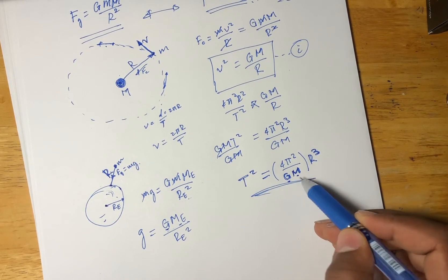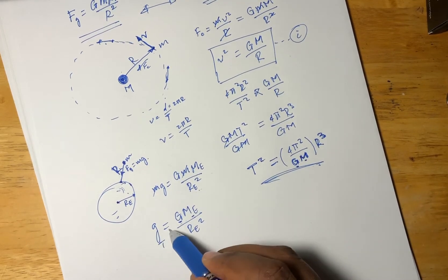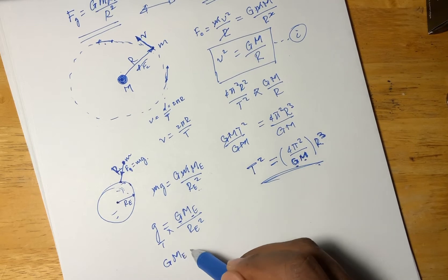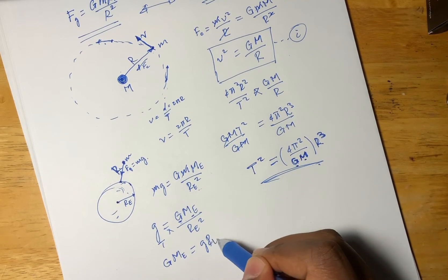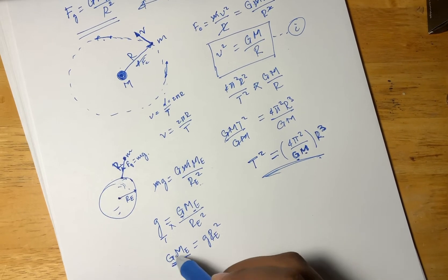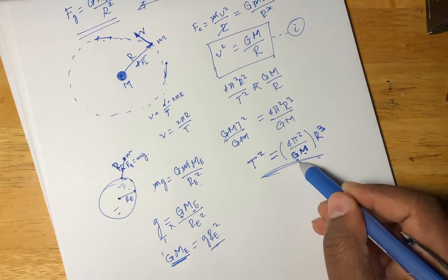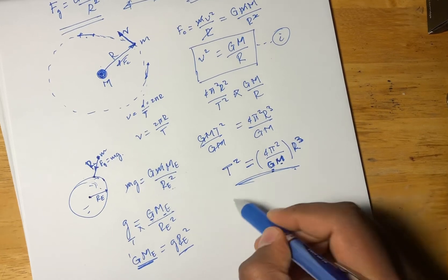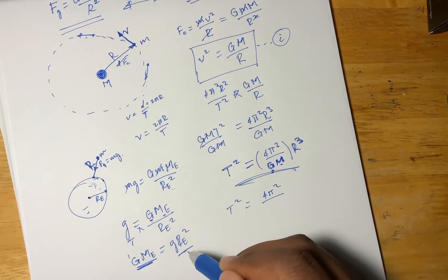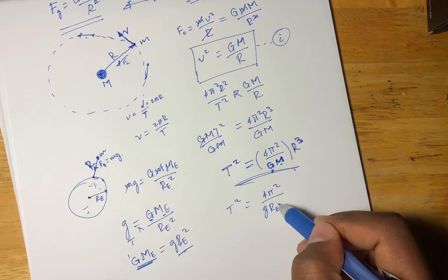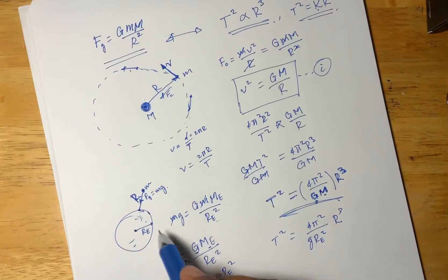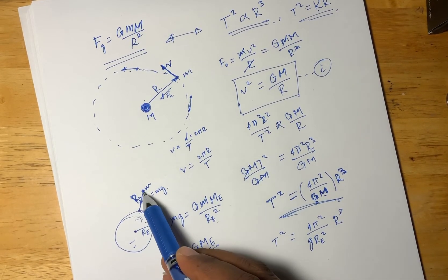By substituting g equals GM over R² into our equation, we get: T² equals 4π² over g times R² times r³, where g is the acceleration due to gravity and R is the radius of the Earth.